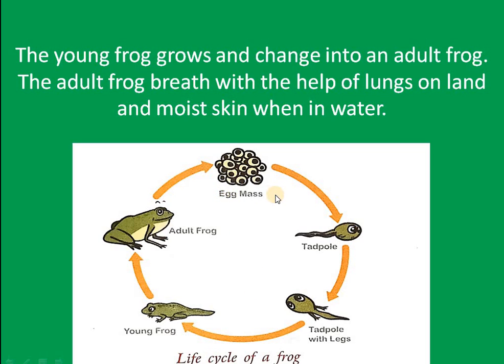The life cycle stages are: egg mass, then tadpole, then tadpole with legs and tail, then young frog, and finally adult frog.